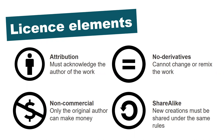If the work includes a share alike element, represented by the circular arrow, then any new creations made using the original must be shared under the same conditions, so that use can't be made more or less restrictive. This element is part of two of the licenses.